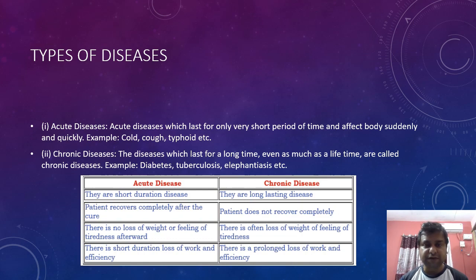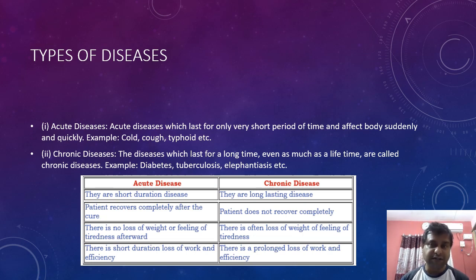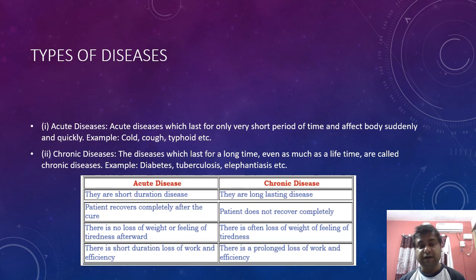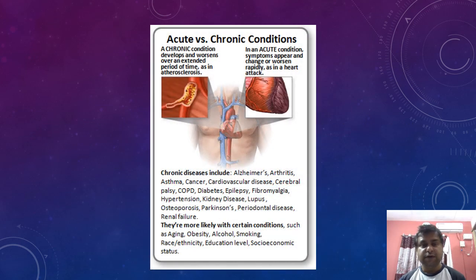If you are asked to differentiate between acute and chronic disease: acute cases are short duration cases whereas chronic means long-lasting, remaining for a long time. In acute cases the patient recovers completely after the cure, whereas in chronic disease the patient does not recover completely. In acute disease there is a loss of weight or feeling of tiredness afterwards.